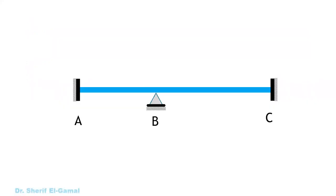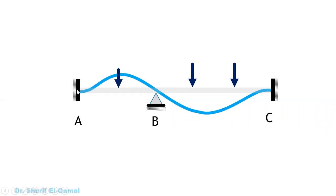To understand the concept of this method, let's consider a beam that is fixed at support C, with an intermediate support at B which could be a pin or roller support. When loads are applied, the beam deflects. At supports A and C, because they are fixed, there will be no rotation. However, at support B, assuming bigger loads at span BC, the beam takes a deflected shape with a rotation we call theta B.